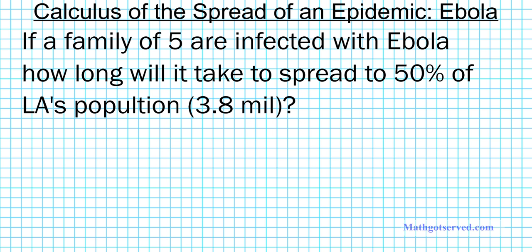The hypothetical problem we're going to use to understand the spread of an epidemic using calculus is as follows. If a family of five are infected with Ebola, how long will it take to spread to 50% of LA's population? Let's assume that the family of five live in Los Angeles, which has a population of 3.8 million. How long will it take to get 50% of the population infected with this disease?